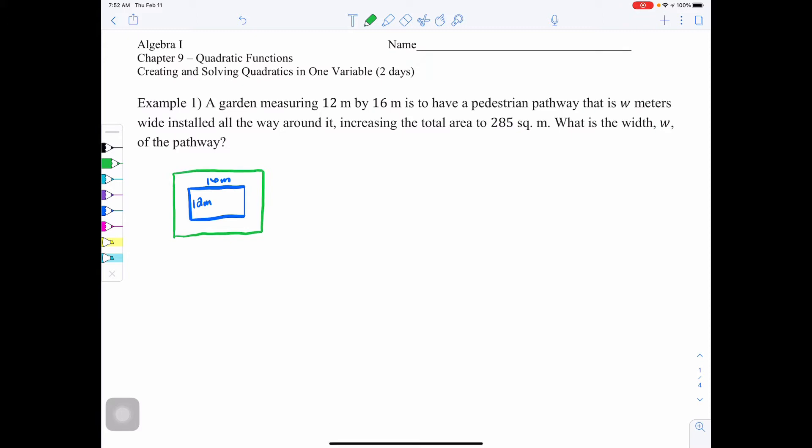In other words, it looks like a sidewalk around that garden. And that sidewalk has a width of W. So from this to this blue is a width of W. It's W from here to here, W from here to here, and again, W from here to here. So it's the same distance all the way around. It also says we know the area is 285. So we'll be able to use that later when solving the actual quadratic.